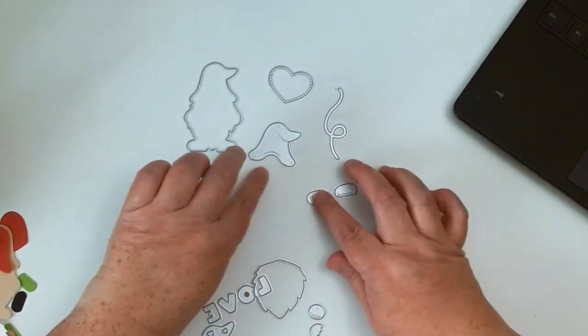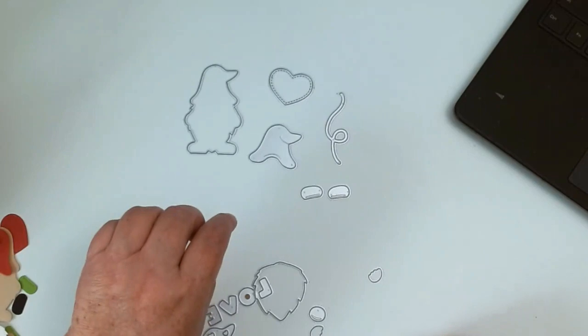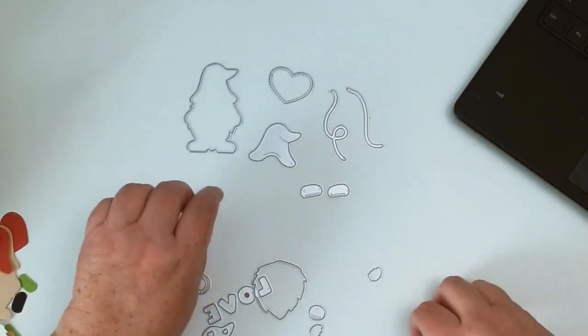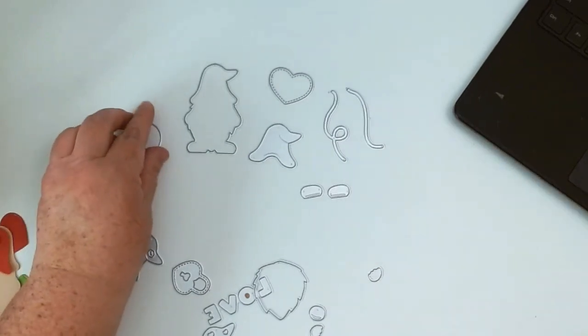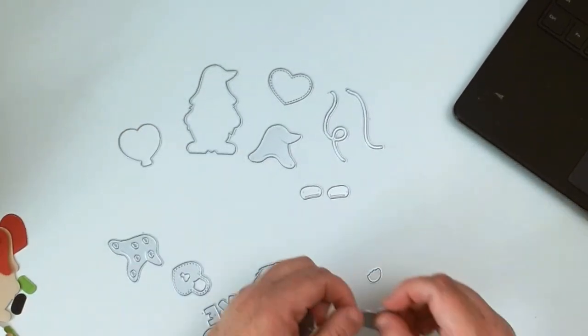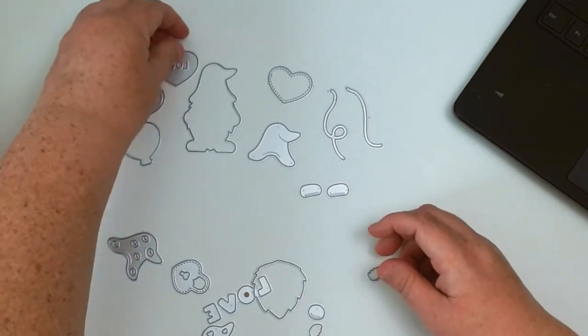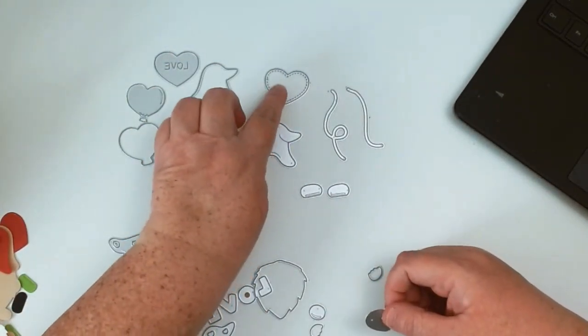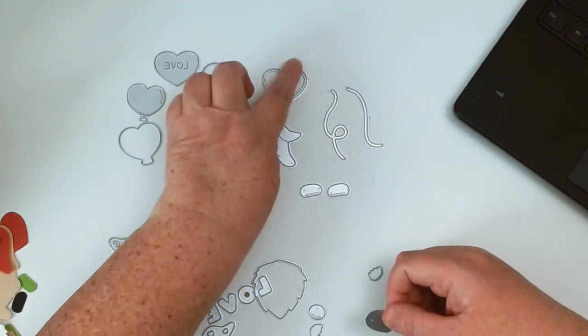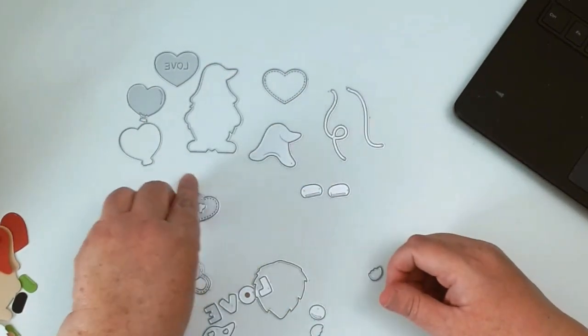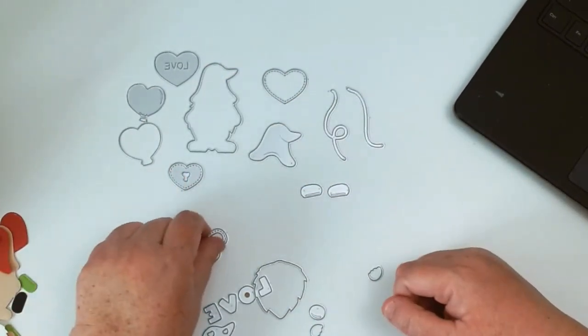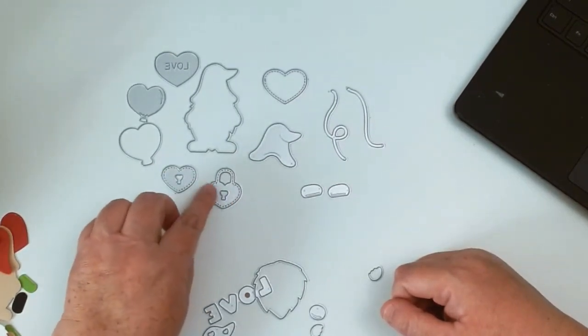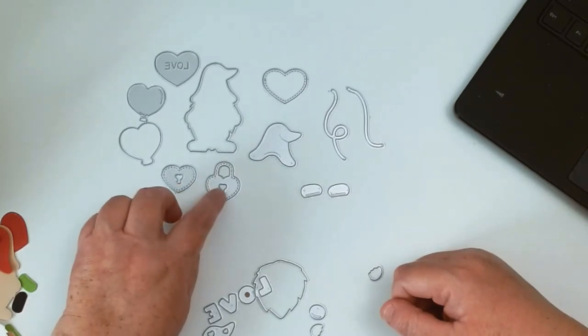You have your shoes, your ribbons for your balloons. You get an outer lying balloon and the inside of it. You have a heart, a heart with a border right there, and then another heart with a lock.